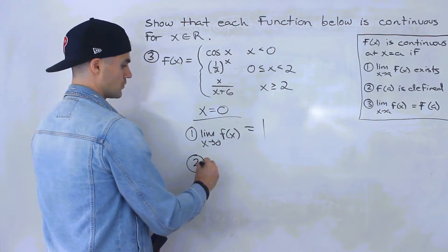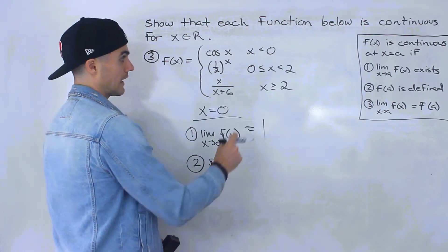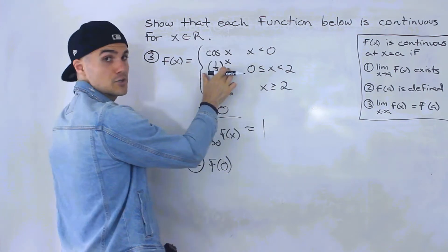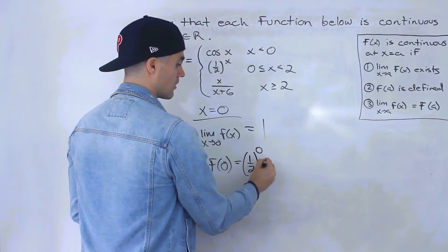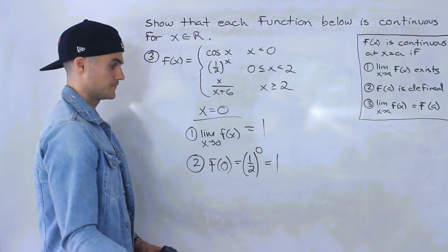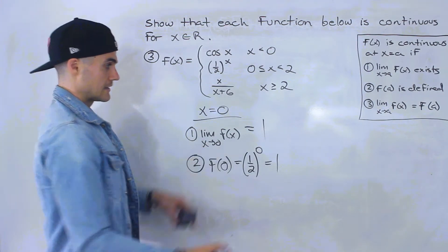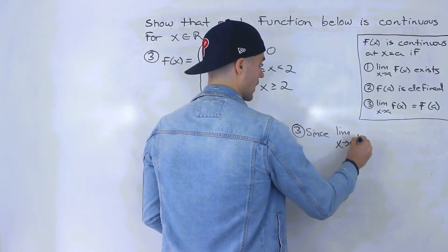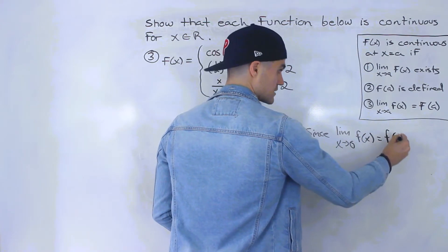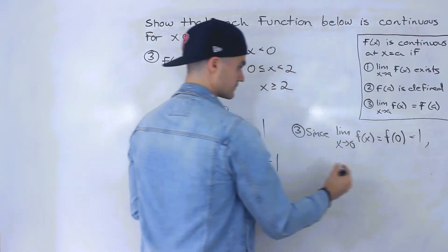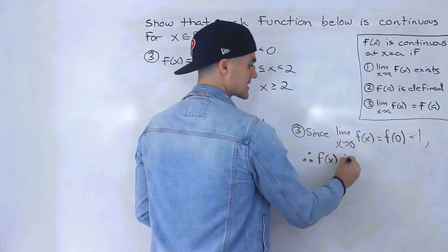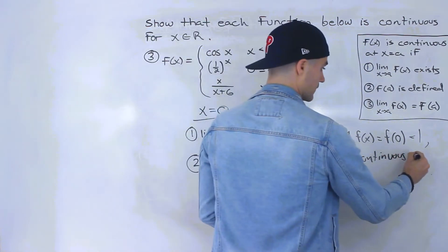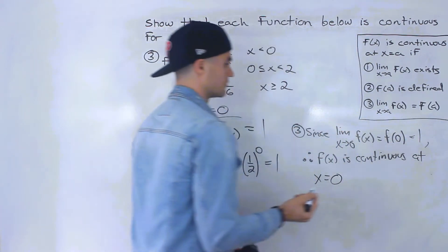Condition two: f(0) must be defined. At x = 0, the piecewise function uses (1/2)^x, so f(0) = (1/2)^0 = 1. Condition three: since the limit as x→0 of f(x) equals f(0), and both equal 1, therefore f(x) is continuous at x = 0.